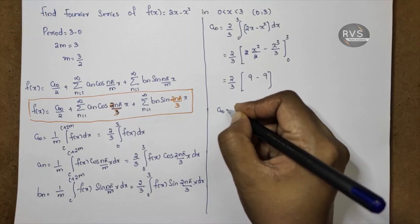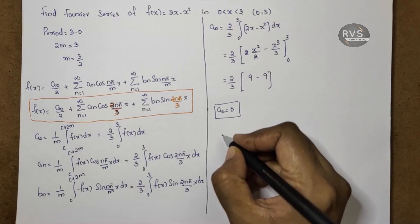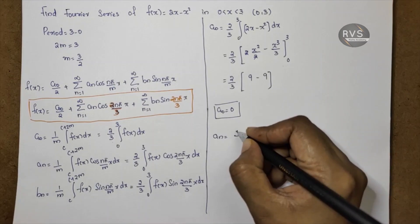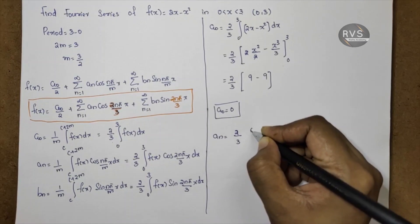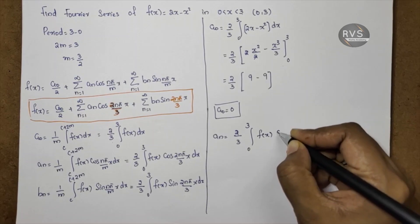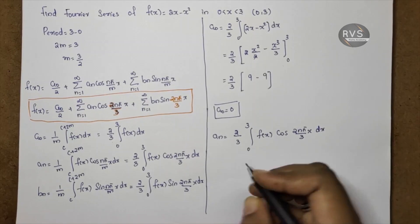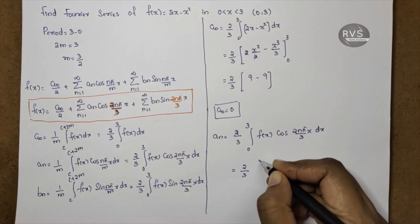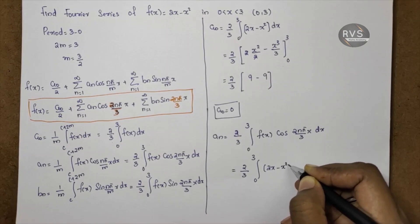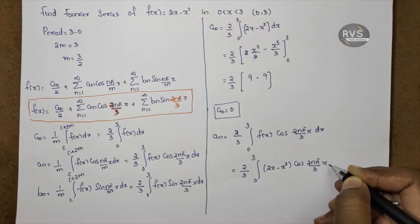So a0 is equal to 0. Now we find an. an is equal to 2 by 3 into the integral from 0 to 3 of F of x into cos 2n pi by 3x dx. So F of x is equal to 2x minus x squared, giving 2 by 3 into the integral from 0 to 3 of (2x minus x squared) into cos 2n pi by 3x dx.